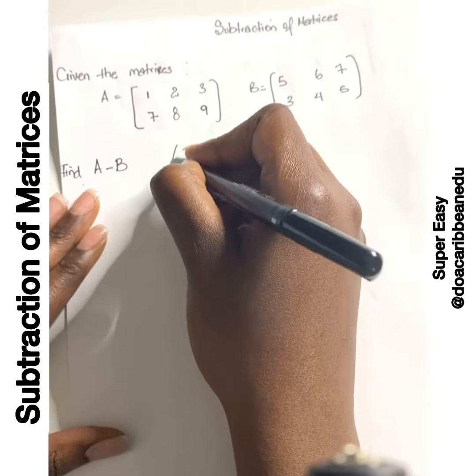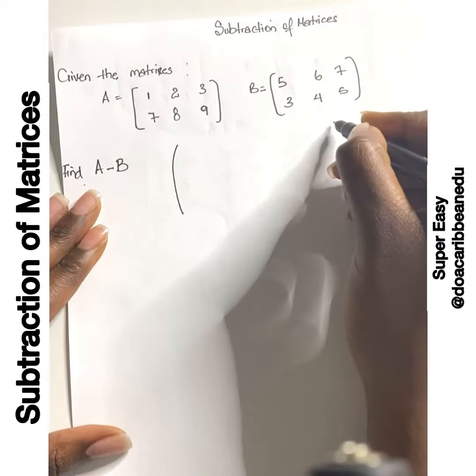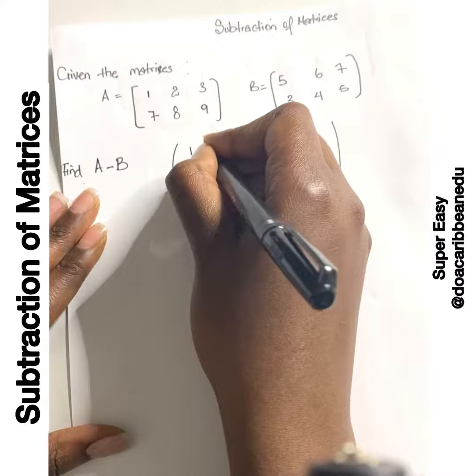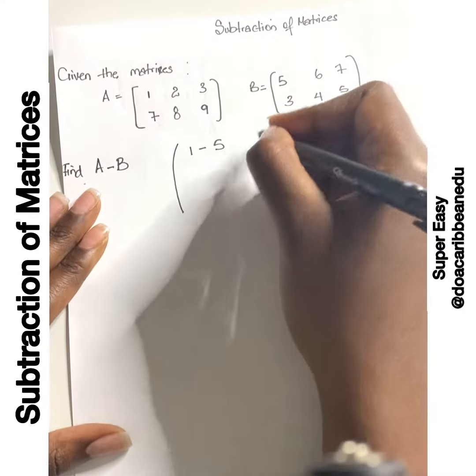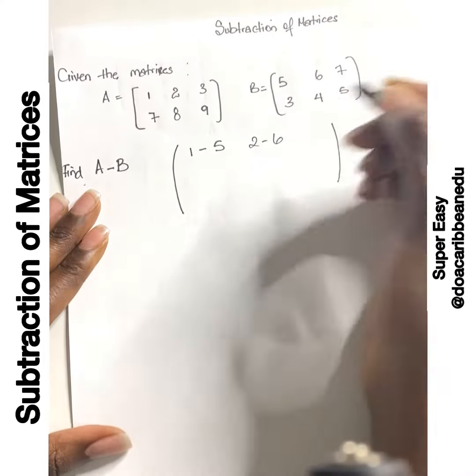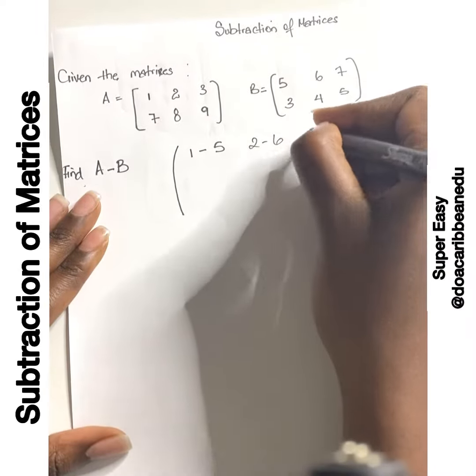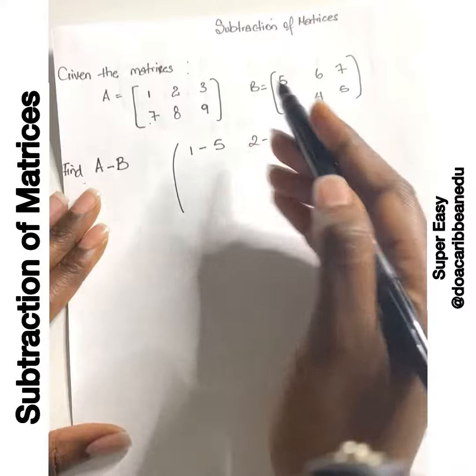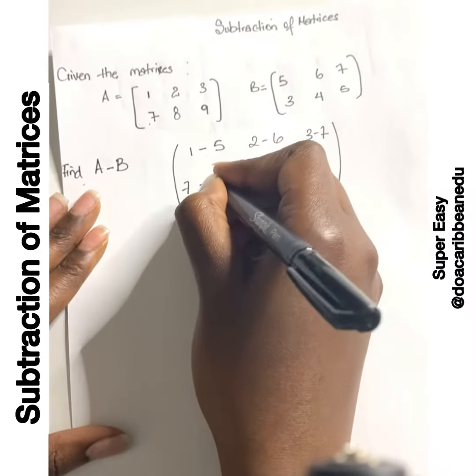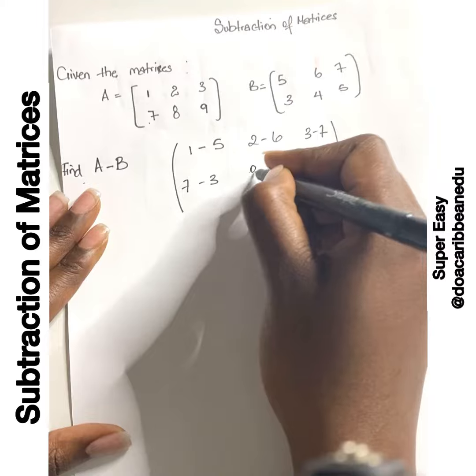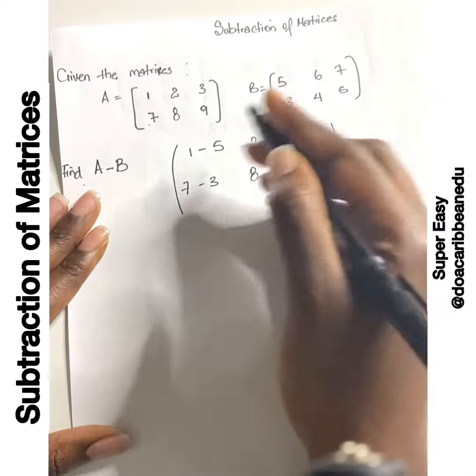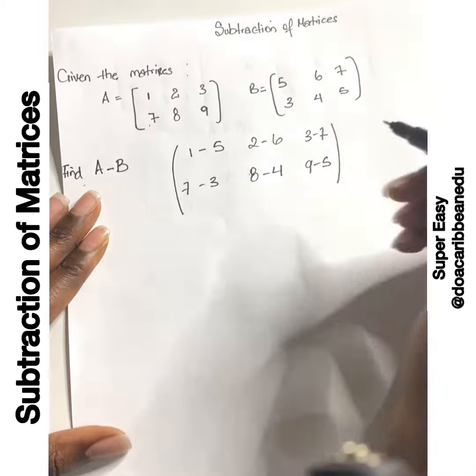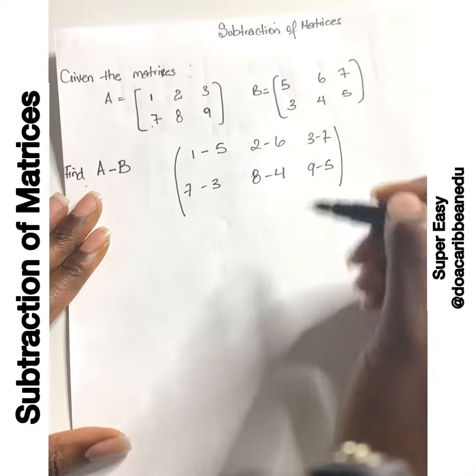Here goes: 1 minus 5, 2 minus 6, 3 minus 7, 7 minus 3, 8 minus 4, and 9 minus 5. We need to find the values for this.